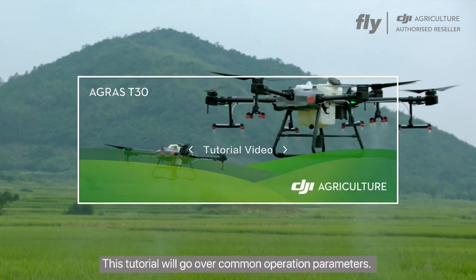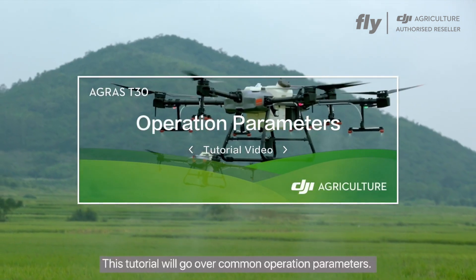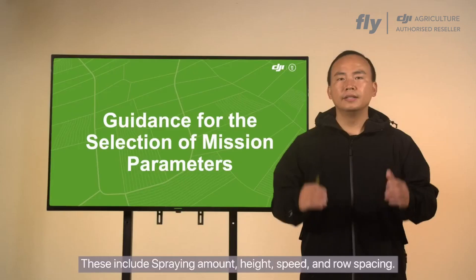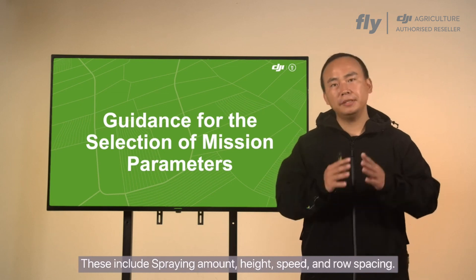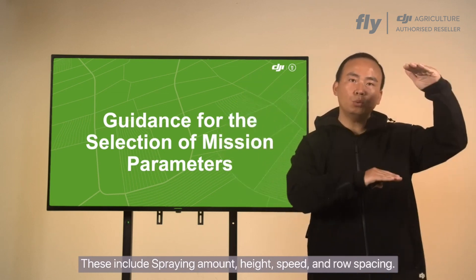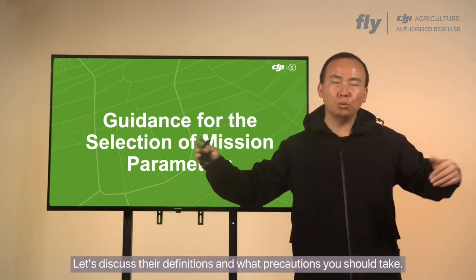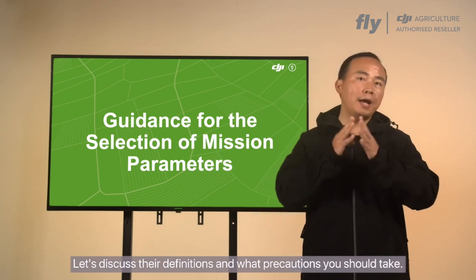This tutorial will go over common operation parameters. These include spraying amount, height, speed, and row spacing. Let's discuss their definitions and what precautions you should take.